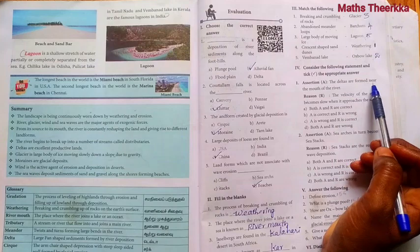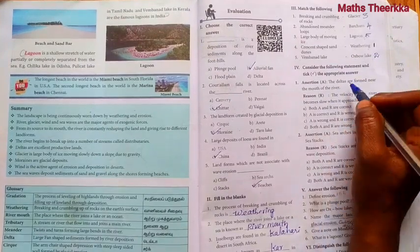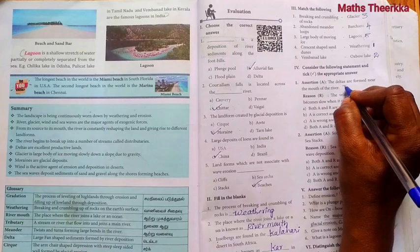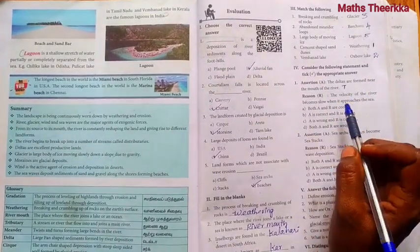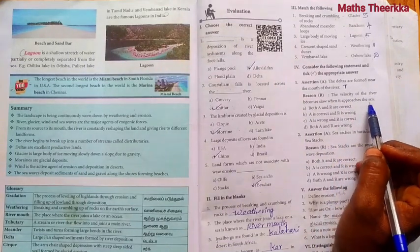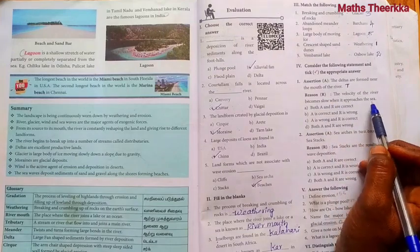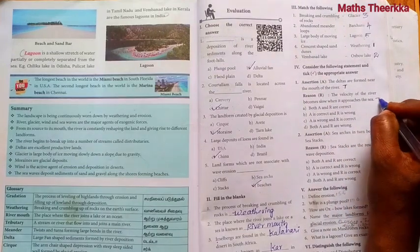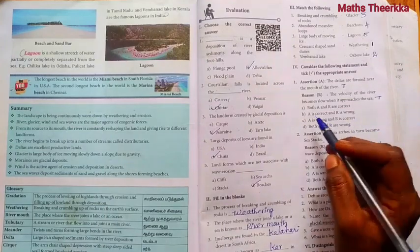The deltas are found near the mouth of the river. This statement is true. Reason, the velocity of the river becomes slow when it approaches the sea. This statement is also true. Both A and B are true, so option A is the answer.